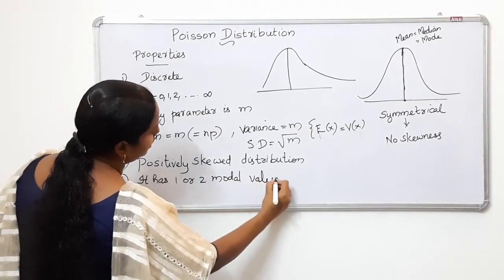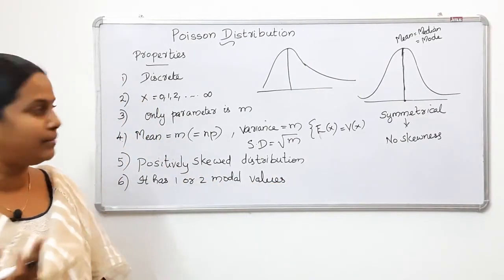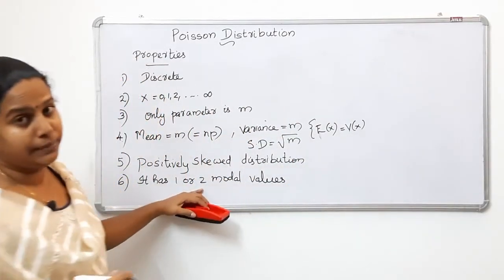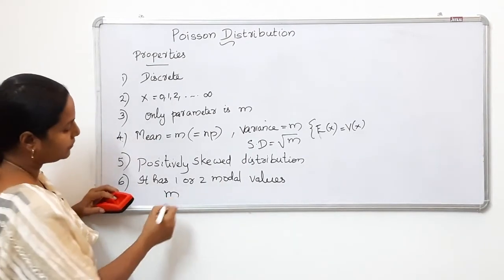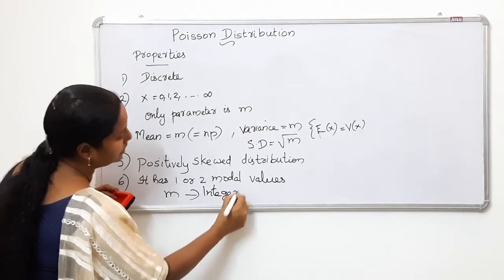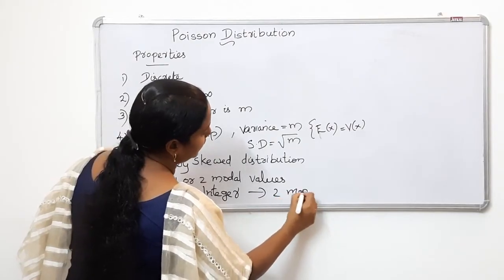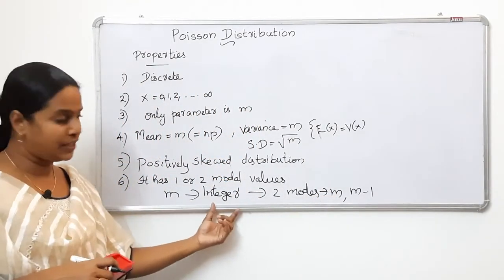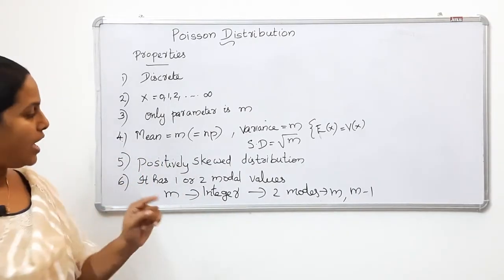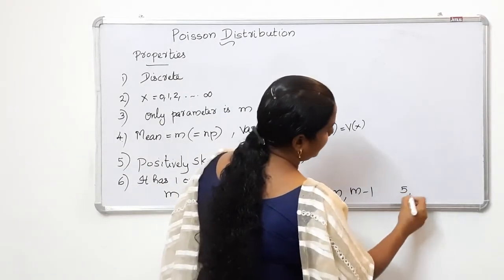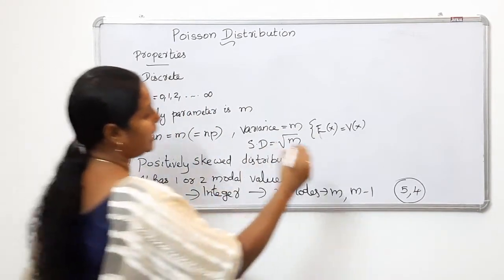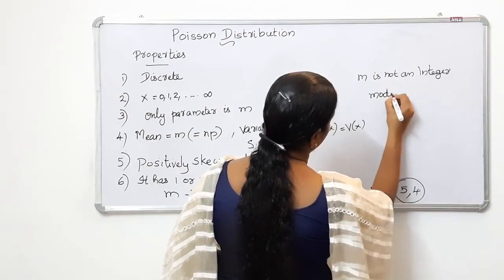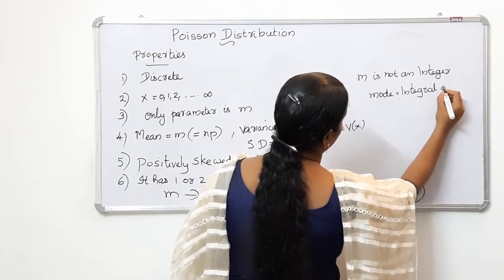If m is an integer, there are two modal values. For the Poisson distribution, the modal values are m and m minus 1. For example, if m equals 5, the two modal values are 5 and 4. If m is not an integer, there is one modal value — the integral part of m. For example, if m is 5.something, the mode is 5.